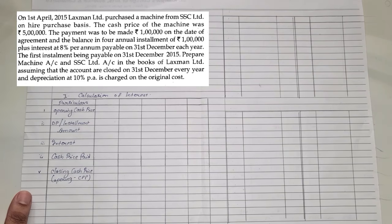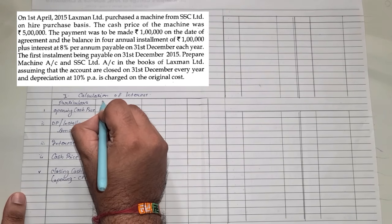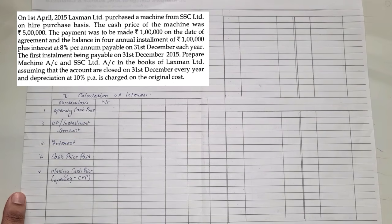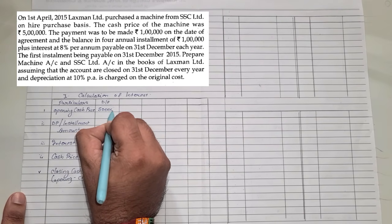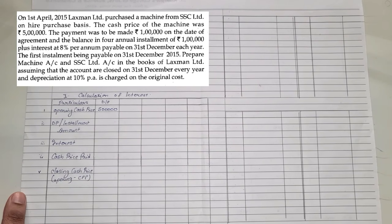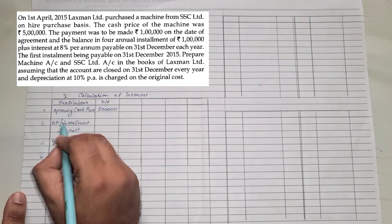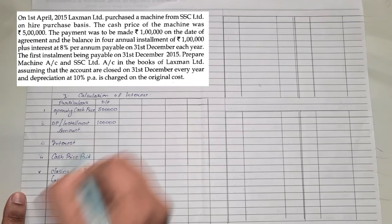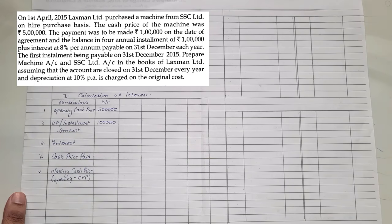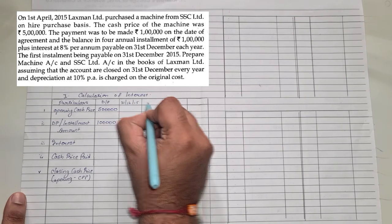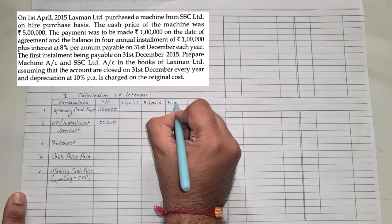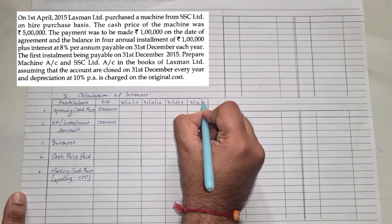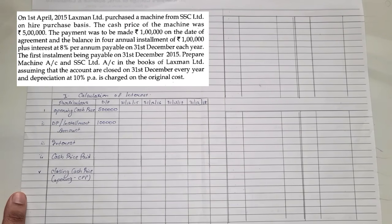The cash price of the machine is five lakhs — that is my opening cash price. The payment on the date of agreement is one lakh — that is my down payment. The balance is paid in four equal installments of one lakh each, plus interest at 8%, payable on 31st December every year: 31/12/2015, 31/12/2016, 31/12/2017, and 31/12/2018.